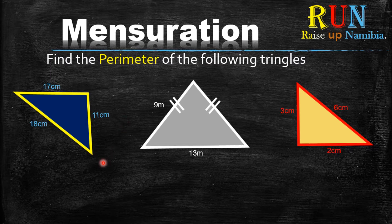So finding the perimeter, we basically find the distance around a certain shape. In this case the shape is a triangle, but basically we always just find the distance around the shape. That's what we mean by the perimeter.